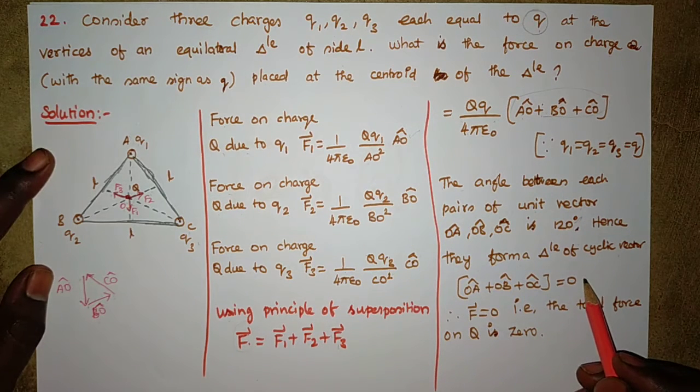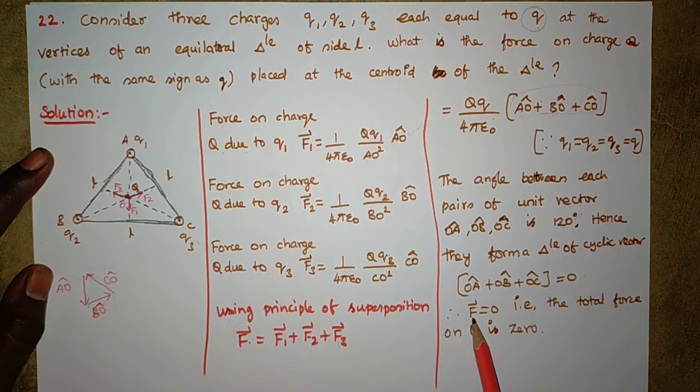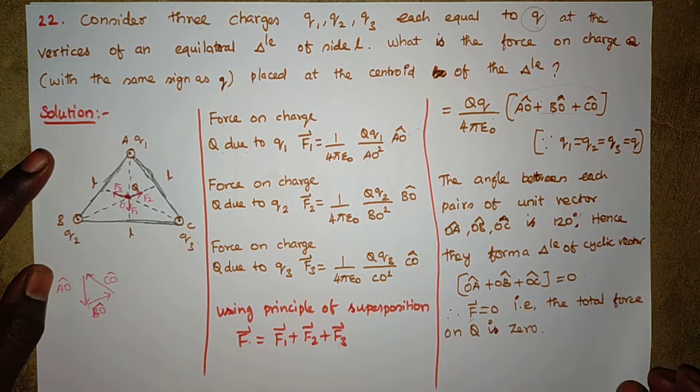So the resultant force is equal to zero. The vector sum is zero. Therefore, the total force on Q is zero. Thank you.